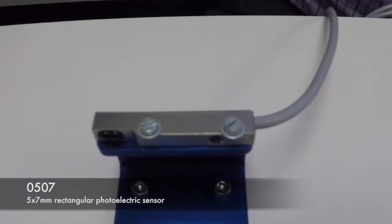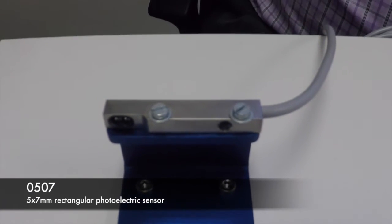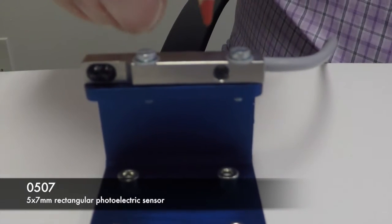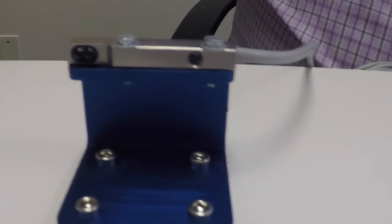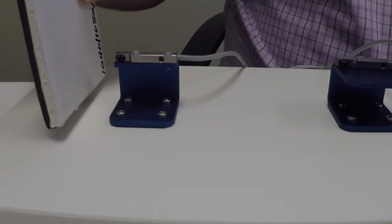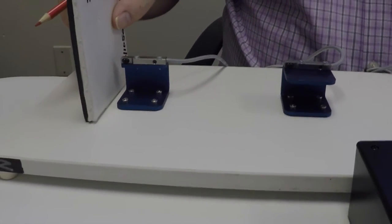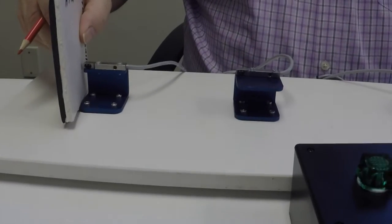This is similar to the products I've shown you earlier. This is a rectangular 5x7mm diffuse sensing. This setup right here is showing you the radial emissions and cylindrical light.